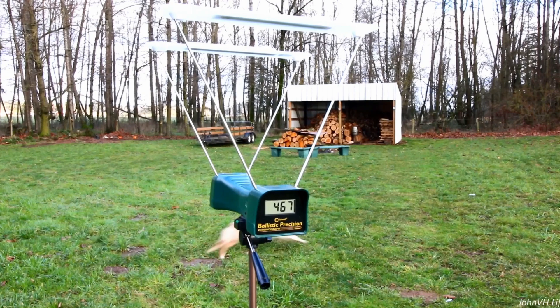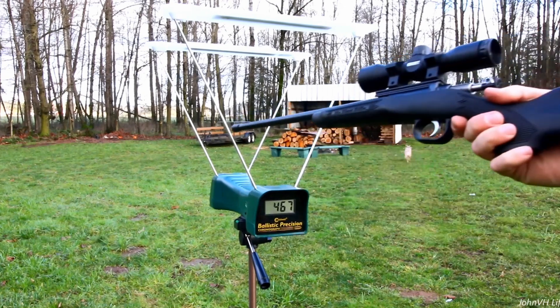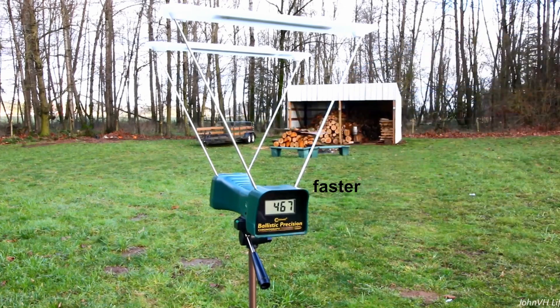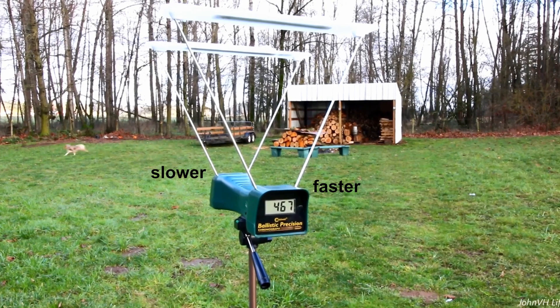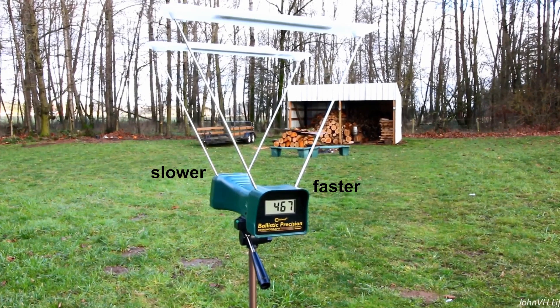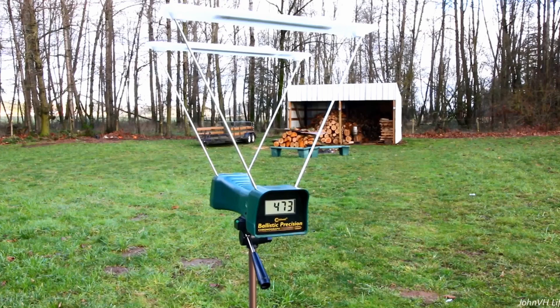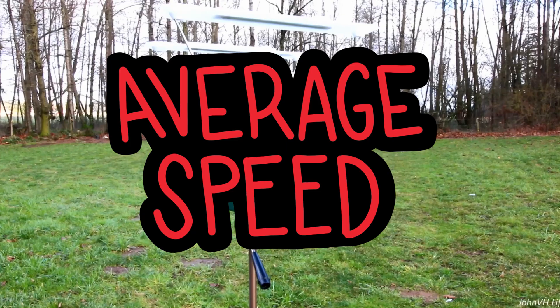Notice that I said the estimate of the speed earlier. The bullet's actually slowing down while it passes through the chronograph, so it's slightly slower when it's passing the second sensor than when passing the first sensor. A bullet doesn't slow down much in that short time, so it doesn't make any practical difference. But technically, the speed is the average speed of the bullet over that time.